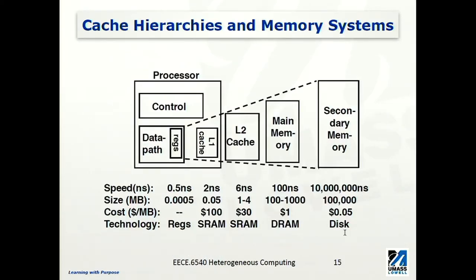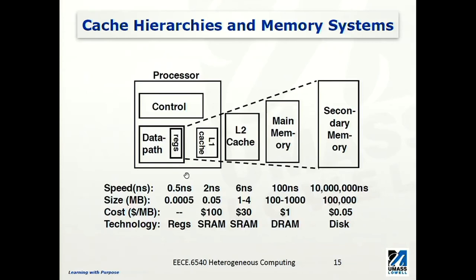Now a few slides about cache hierarchy. Probably some of you have learned this in a computer architecture course. The main reason we have on-chip memory — called cache — is to bridge the speed gap between the microprocessor and memory access. The microprocessor runs at very high frequency compared to the memory subsystem. If you go from the processor towards main memory, the further you go, the larger the capacity and the lower the cost, but also the slower the speed. That's why we need level 1, level 2, or even level 3 cache on-chip to bridge the gap.